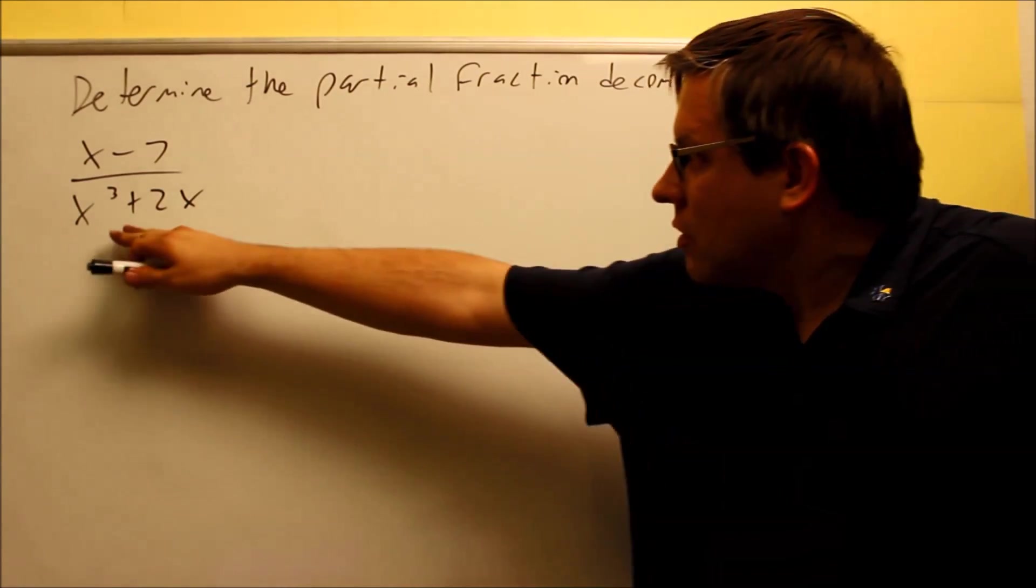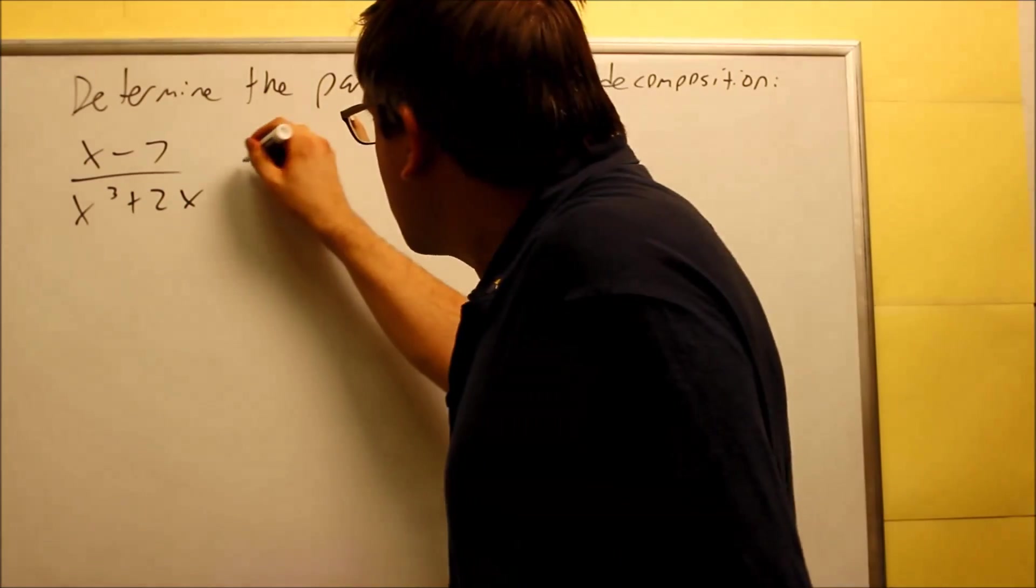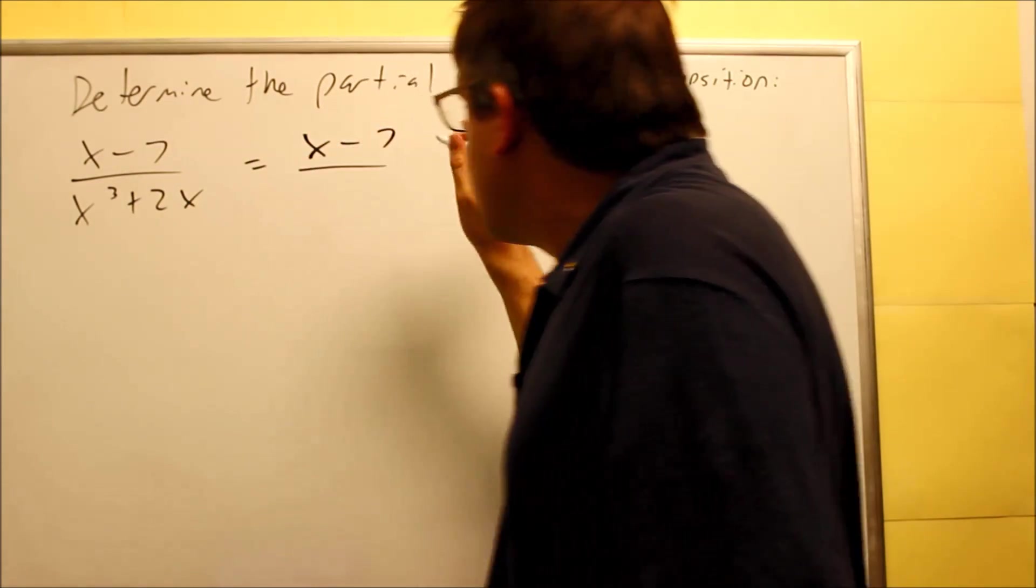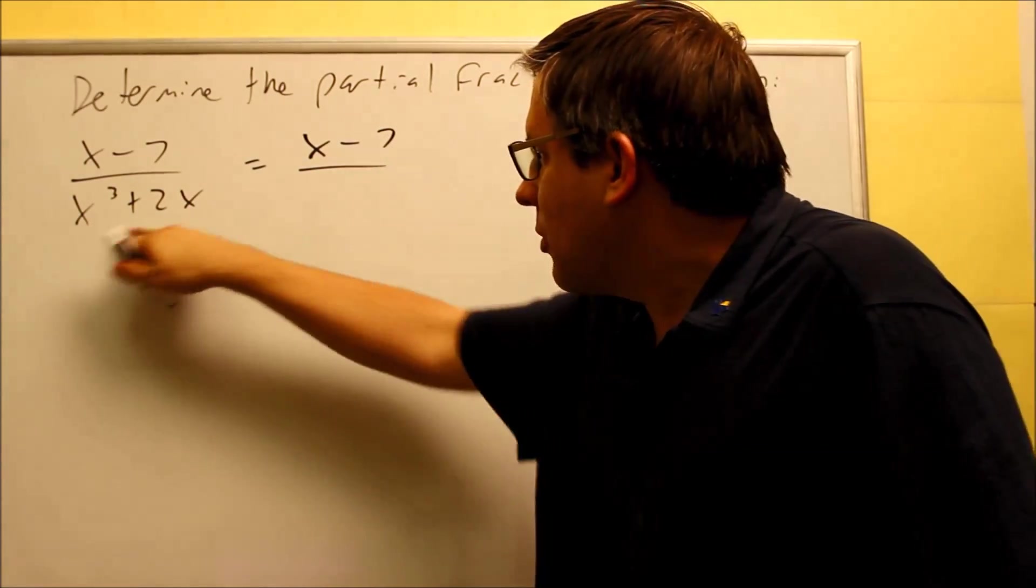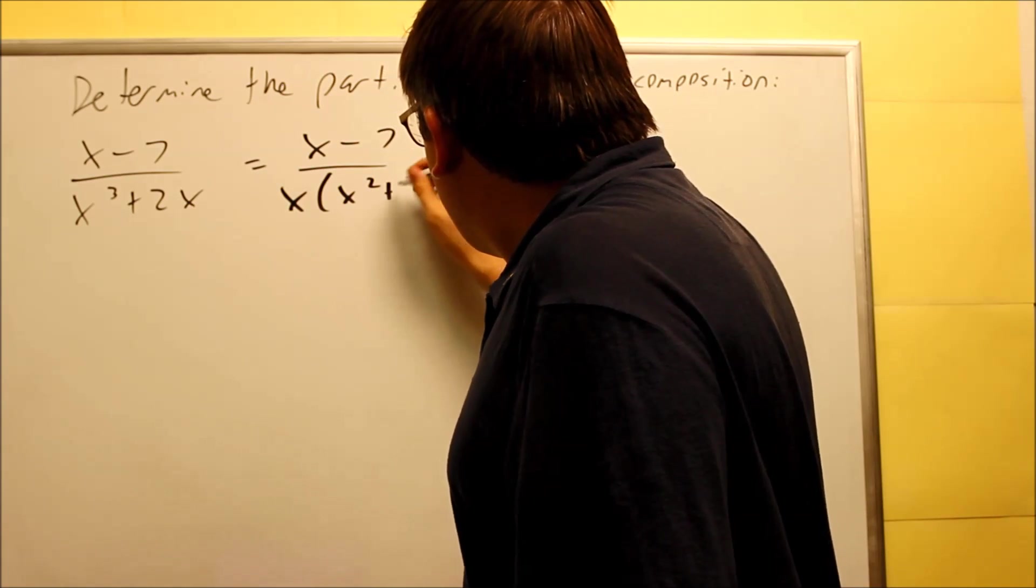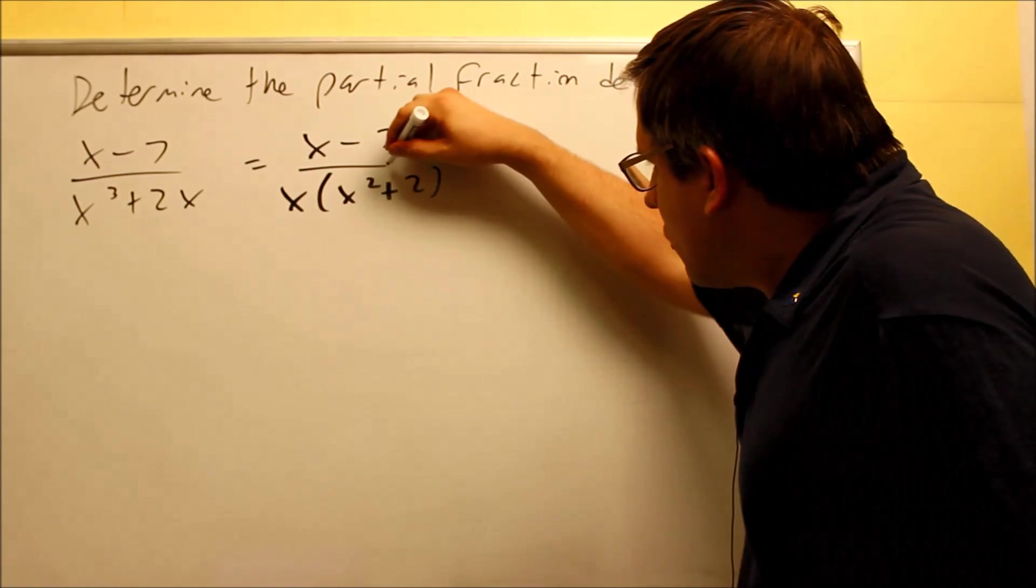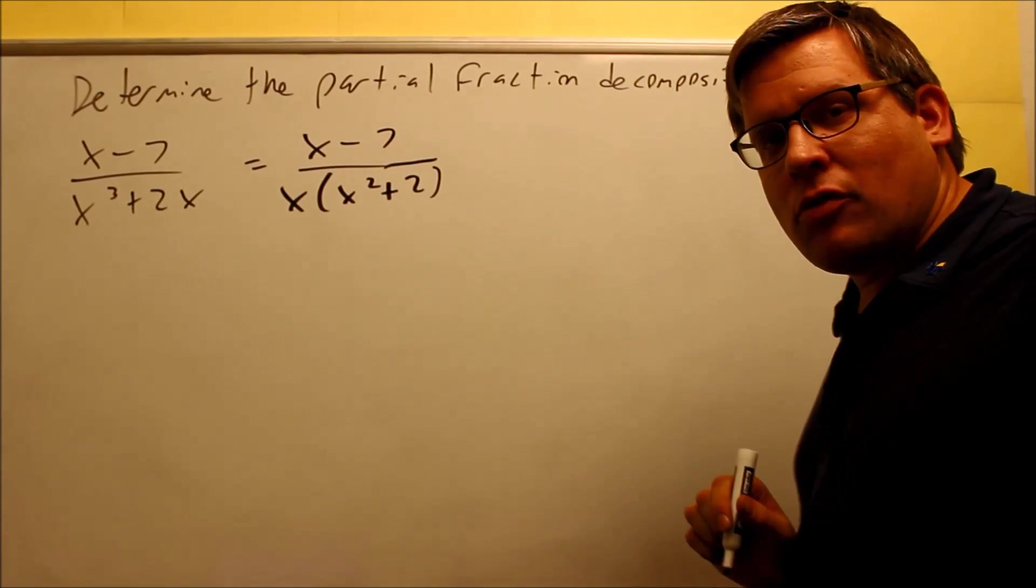Okay, one more. We've got something that can be factored once again. So we need to, first, all these problems, we want to make sure the bottom is factored so you know which rule to use. This only has a common factor of x that we're allowed to pull out and we get this as a result. We can't do any more factoring because x squared plus 2 is something that cannot be factored.